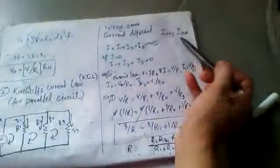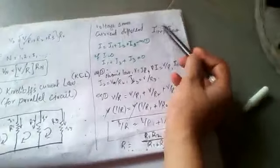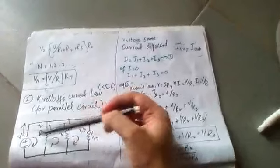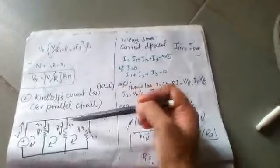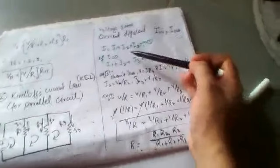The current entering the node is equal to the current output. If I set up the equation equal to zero, the current entering equals the current leaving. The current will be divided among the branches. So we have: I equals I1 plus I2 plus I3.